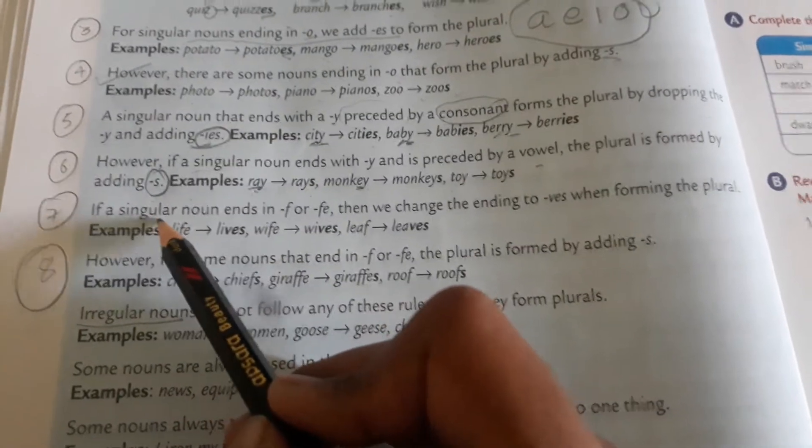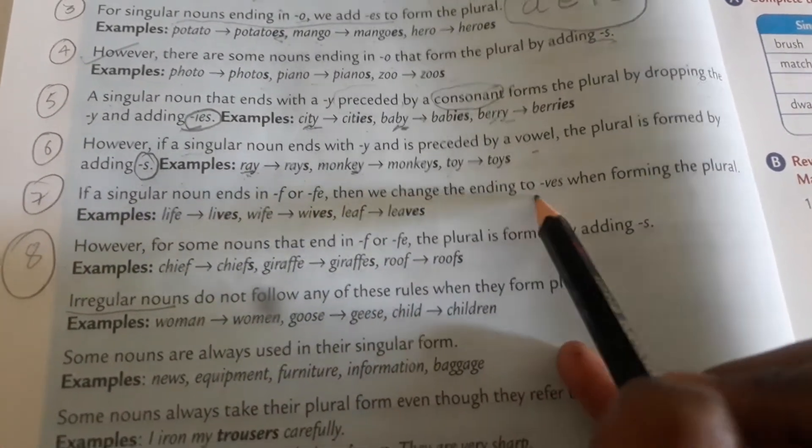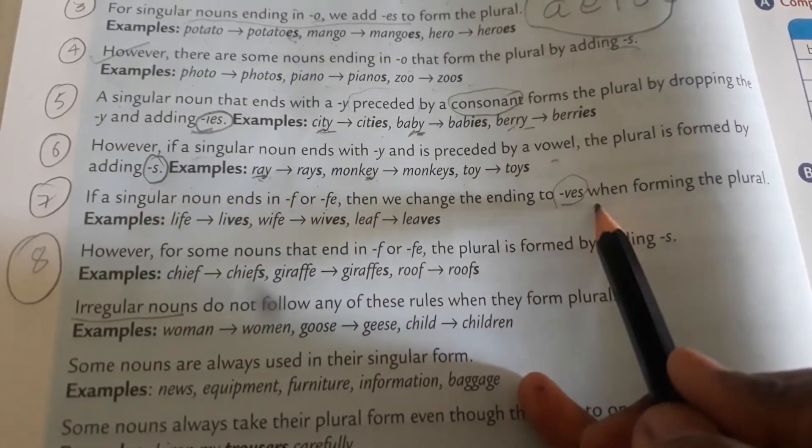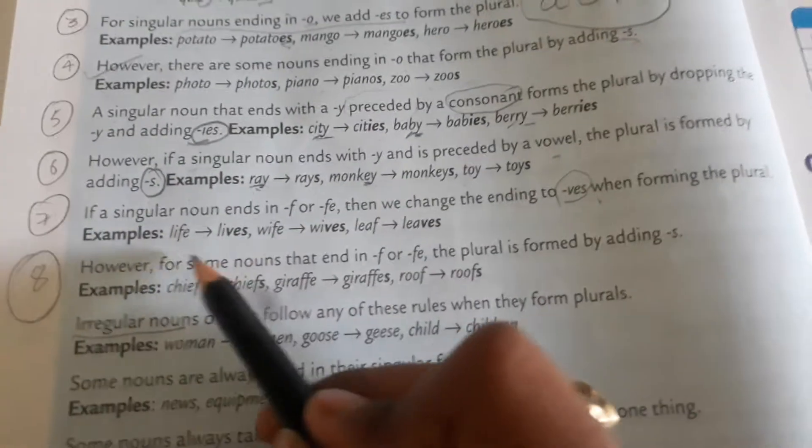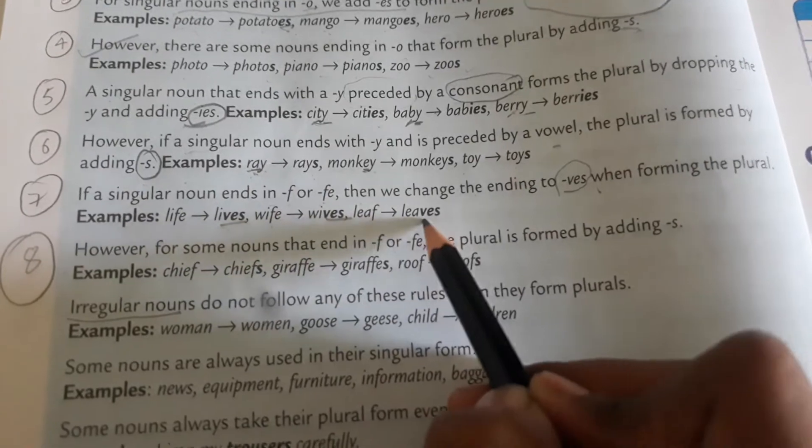Now come to the seventh point. If a singular noun ends with F or FE, then we change the ending to V, E, S. To make it plural, life becomes lives, see V, E, S. Wife becomes wives, leaf becomes leaves. Got it?